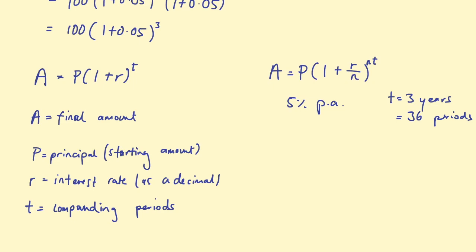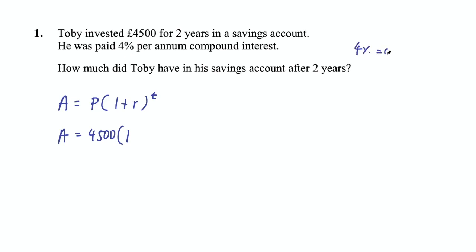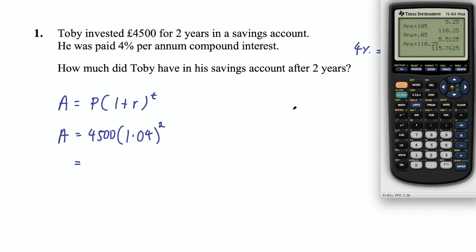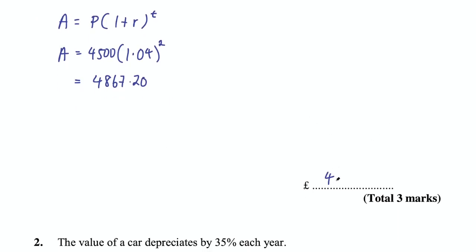Keeping this formula in mind, let's look at some examples. The first question says: Toby invested £4,500 for two years in a savings account. He was paid 4% per annum compound interest. How much did Toby have after two years? Using A = P(1 + r)^t, P is 4,500, r is 0.04, so we have 4,500 multiplied by 1.04 to the power of 2. Putting that in the calculator gives £4,867.20.